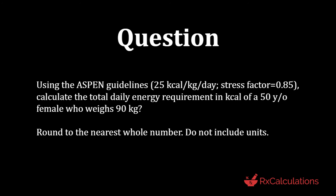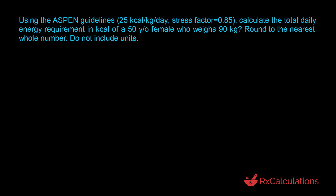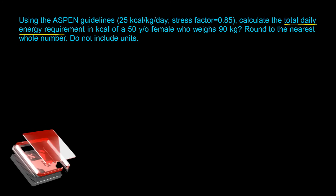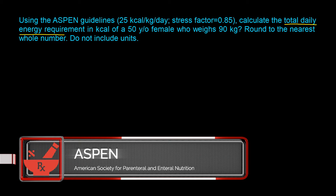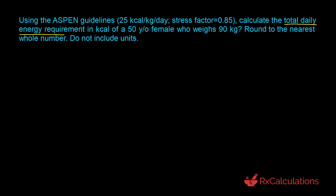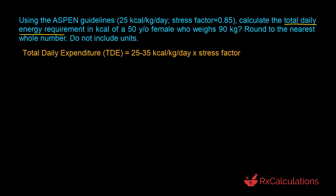This question says: using the ASPEN guidelines, 25 kcal/kg/day, stress factor 0.85, calculate the total daily energy requirement in kcal of a 50-year-old female who weighs 90 kilograms. Round to the nearest whole number, do not include units. ASPEN stands for the American Society for Parenteral and Enteral Nutrition. When using ASPEN guidelines, total daily expenditure equals 25–35 kcal/kg/day multiplied by the stress factor.